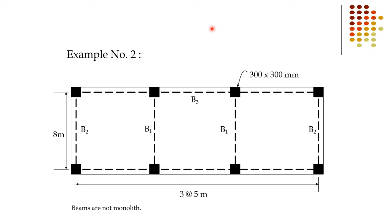In this design example, the center-to-center spacing in the longer dimension is 8 meters. The shorter side has three spans of 5 meters each. The beams are labeled B2 and B1 — B2 is the exterior beam and B1 is the interior beam. On the short side are beams B3 with column sizes of 300 by 300 millimeters.